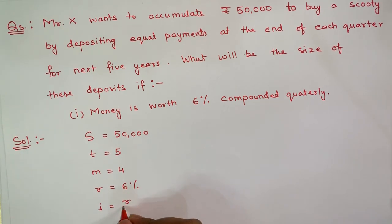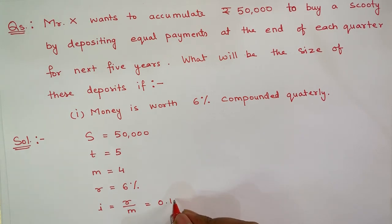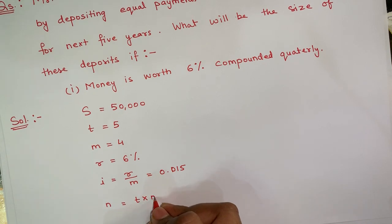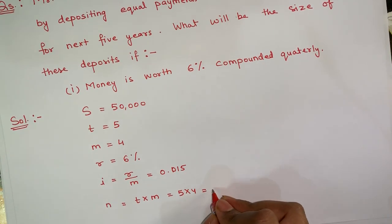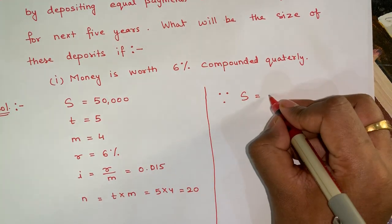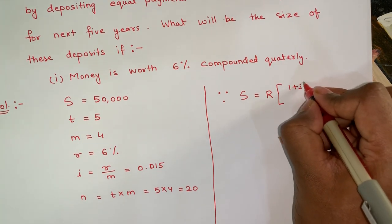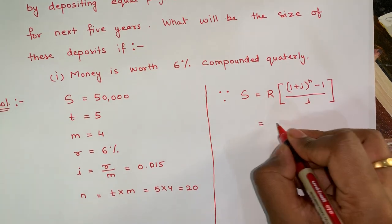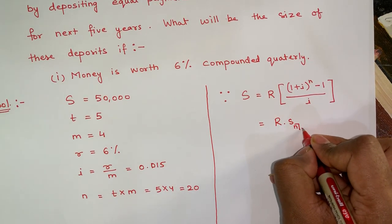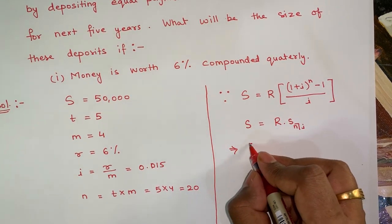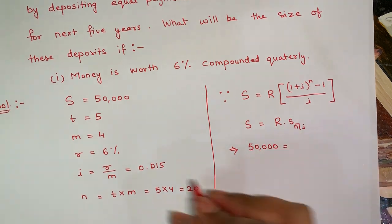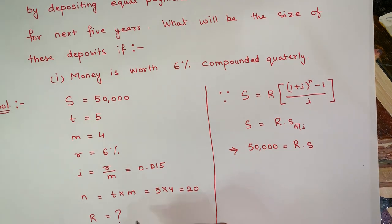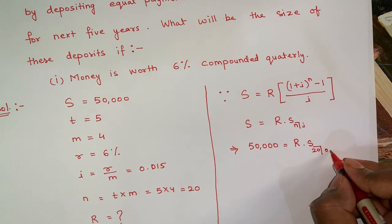The rate of interest is 6% compounded quarterly, so i = rate / M = 0.06 / 4 = 0.015, and n = T × M = 5 × 4 = 20. Since Amount = R × [(1 + i)^n − 1] / i, we can rewrite this as R × S(n, i). We need to find R, so we set up: 50,000 = R × S(20, 0.015).